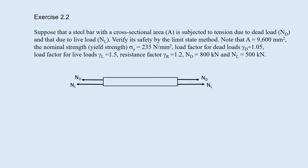Exercise 2.2. Suppose that a steel bar with a cross-sectional area A is subjected to tension due to dead load Nd and that due to live load Nl. Verify its safety by the limit state design. Note that A equals 9600 square millimeters and the nominal strength, which is the yield strength, sigma y, are equal to 235 newton per square millimeters. Load factor for dead load, Gamma D equals 1.05. Load factor for live load, Gamma L equals 1.05. Resistance factor, Gamma R equals 1.2. And Nd equals 800, and Nl equals 500 kilonewton.